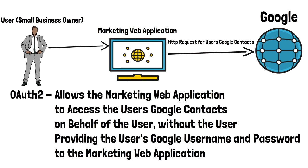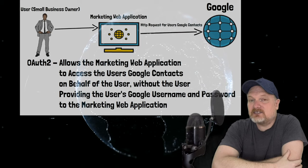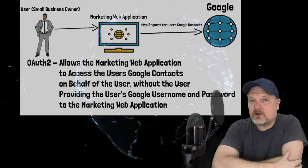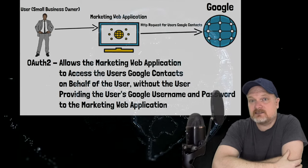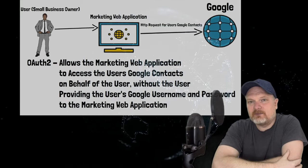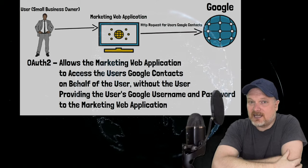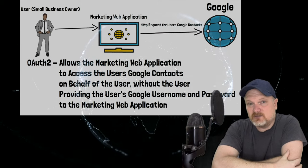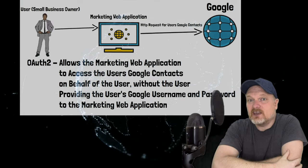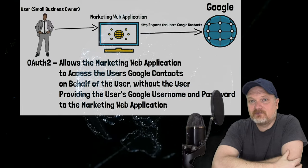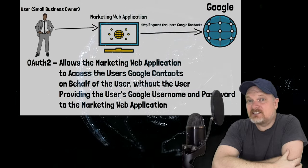The marketing web application will not immediately have access to the user's Google contacts — they are two separate entities on the internet. How can the marketing web application gain access to the user's Google contacts without knowing the user's Google username and password? The user doesn't trust the web application with those credentials. The answer is through the OAuth 2 standard, which is an open authorization standard.